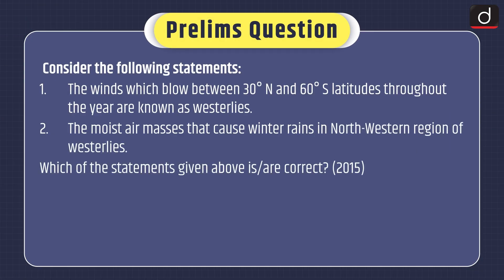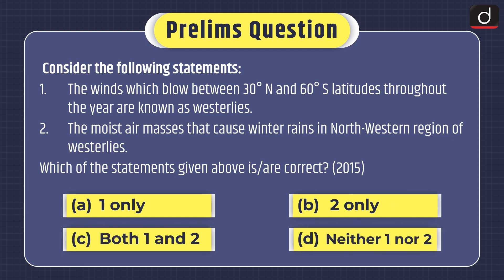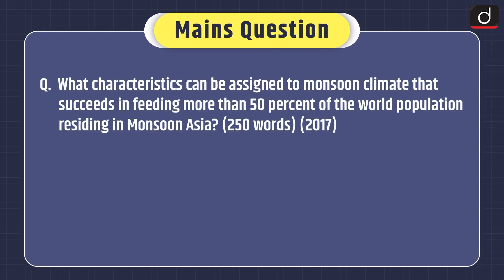Now it's time for the practice questions. First, note down the prelims question which was asked in the 2015 exam. Question: Consider the following statements. One: the winds which blow between 30 degrees north and 60 degrees south latitudes throughout the year are known as westerlies. Two: the moist air masses that cause winter rains in the north-western region of India are part of westerlies. Which of the statements given above is or are correct? — One only, two only, both one and two, or neither one nor two. For the mains question, asked in the 2017 exam: What characteristics can be assigned to monsoon climate that succeeds in feeding more than 50% of the world population residing in monsoon Asia?